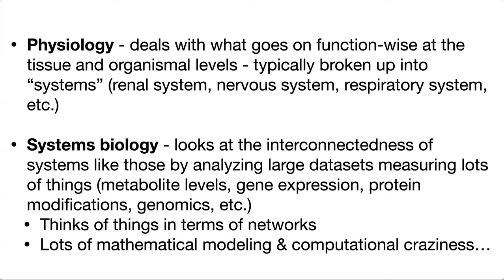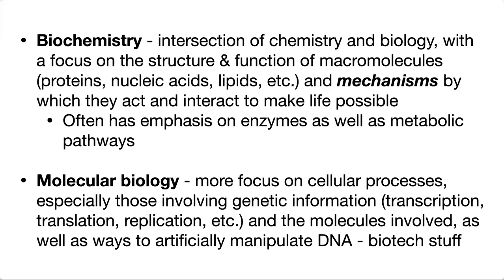If you want to look at the interconnectedness of these systems, then you turn to systems biology. It looks at those systems using large data sets — measuring lots of things like metabolite levels, gene expression, protein modifications, genomics, etc. So lots of that omics content goes into systems biology. There's lots of computation, mathematical modeling, and thinking of things in terms of networks rather than isolated processes. Systems biology is kind of the opposite of biochemistry, where we're getting down to the nitty-gritty mechanisms at the molecular level.